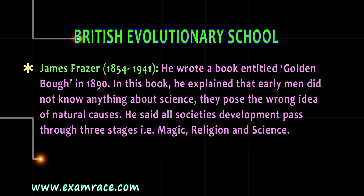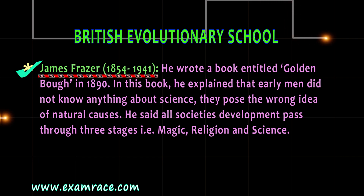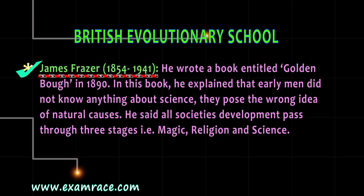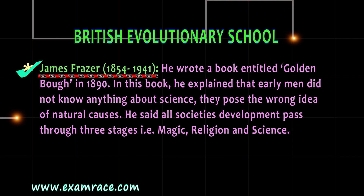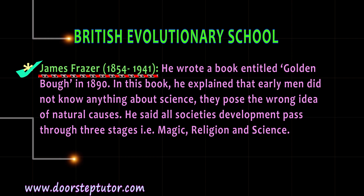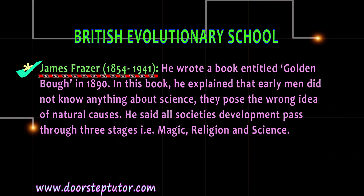James Fraser wrote a book titled The Golden Bough in 1890. In this book, he explained that early men did not know anything about science and posed wrong ideas about natural causes. He said all societies' development passed through three stages: magic, religion, and science.